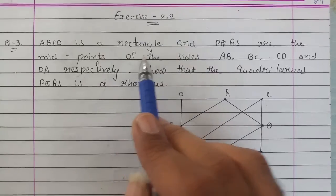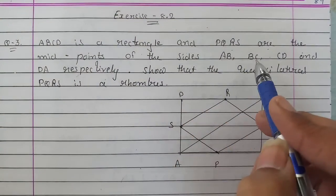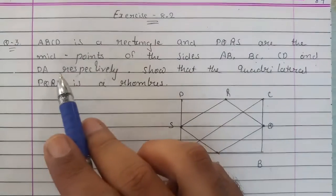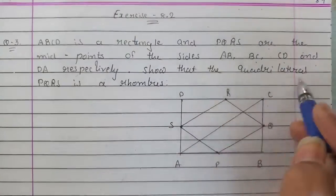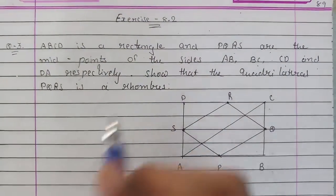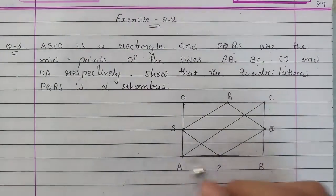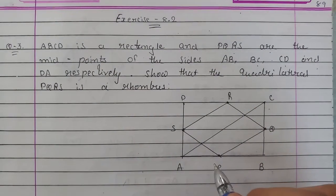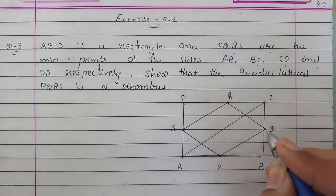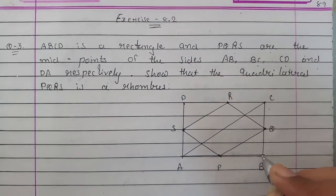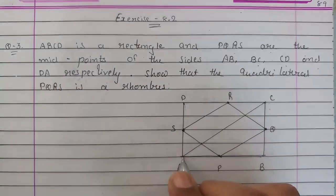ABCD is a rectangle and PQRS are the midpoints of the sides AB, BC, CD and DA respectively. Show that quadrilateral PQRS is a rhombus. What we have given is ABCD which is a rectangle and P is midpoint of AB, Q is midpoint of BC, R is midpoint of CD and S is midpoint of DA.